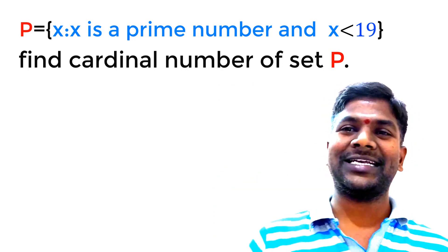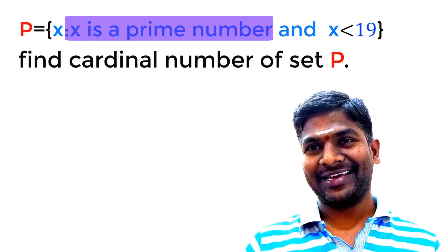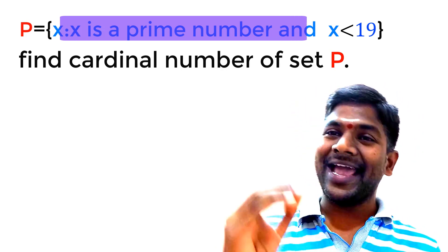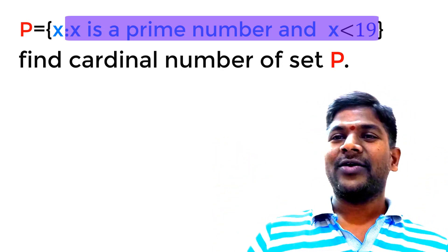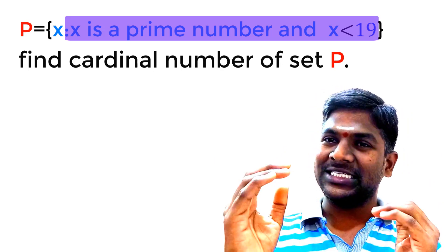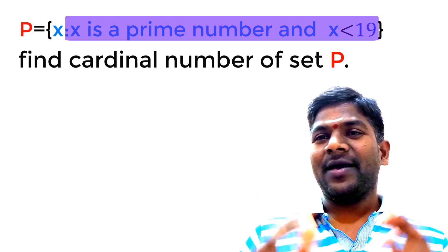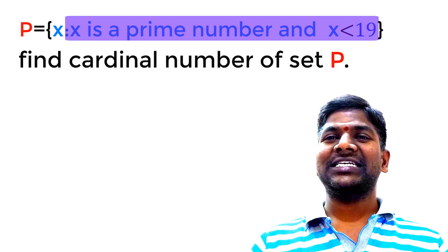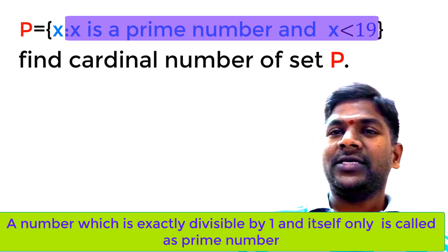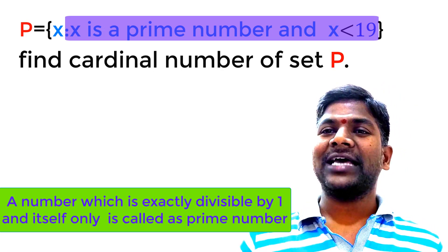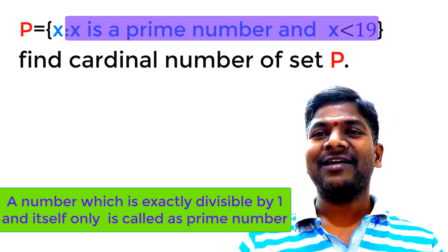All the elements of set P are denoted by X. Can we take all the prime numbers here? No — the condition given is that X should be less than 19, so we take only the prime numbers which are less than 19. Before writing the set in roster form, let us recall what a prime number is. A prime number is a number which is exactly divisible by 1 and itself only. A prime number has only two factors: 1 and itself, and cannot be divisible by any other number.